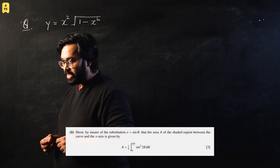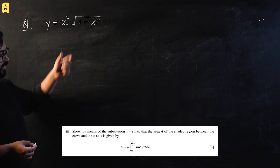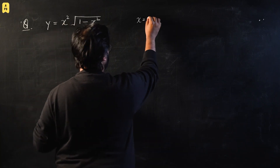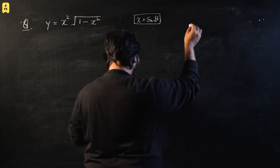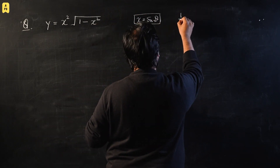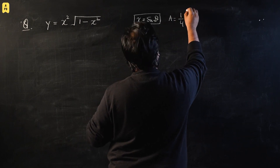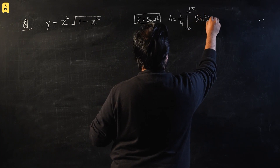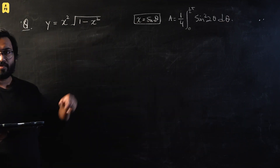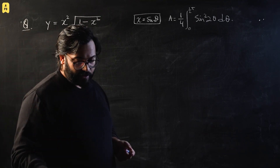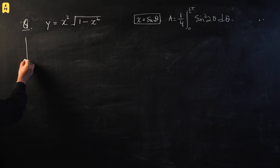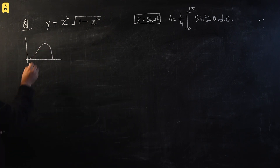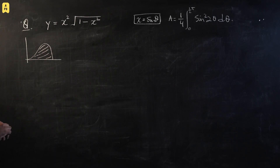Now let's move on to the next part: integration by substitution. We have to use the substitution x equals sine theta, and our goal is to show that the integral of the area equals one-quarter of the integral from zero to pi/2 of sine squared 2 theta. First we need to understand the shape of the graph and find the x-limits. The shaded area runs from x equals zero to a point we'll call A.